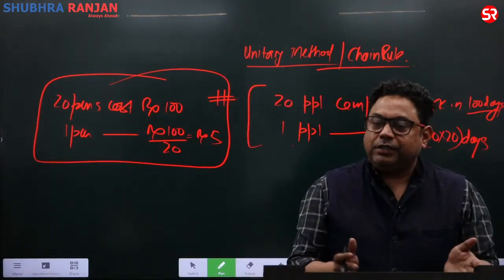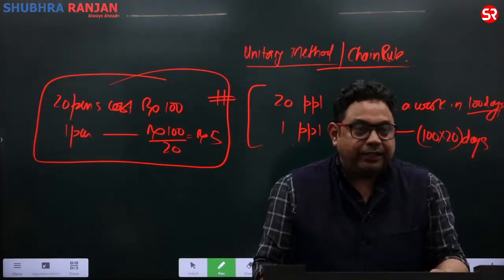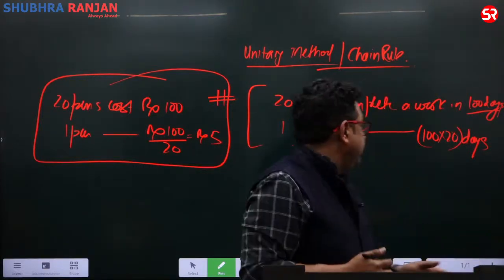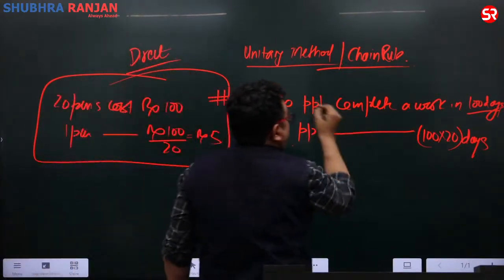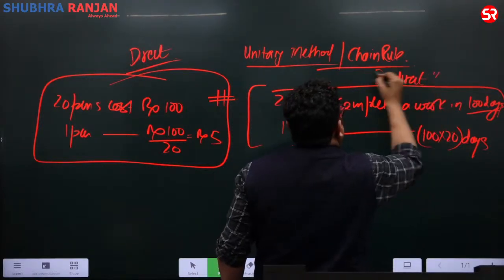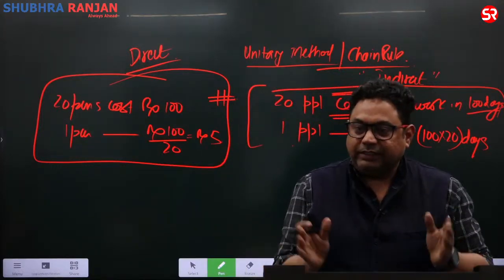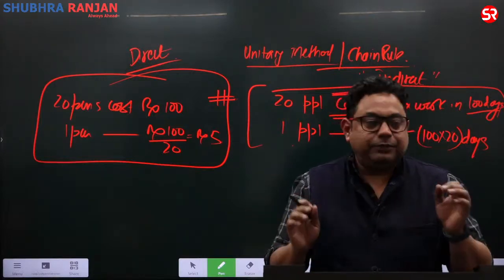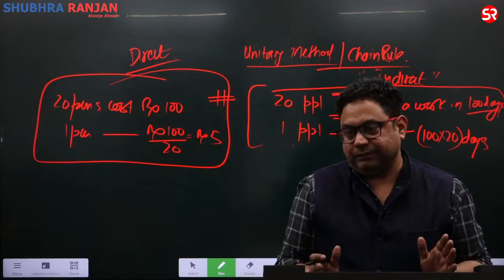Think rationally — don't divide first. 20 pens at rupee 100 means one pen costs less than 100, so we divide. But 20 people in 100 days means one person takes more days, so we multiply. This is direct proportion for pens, and indirect proportion for work. These are two different aspects — ek direct hota hai, ek indirect hota hai.